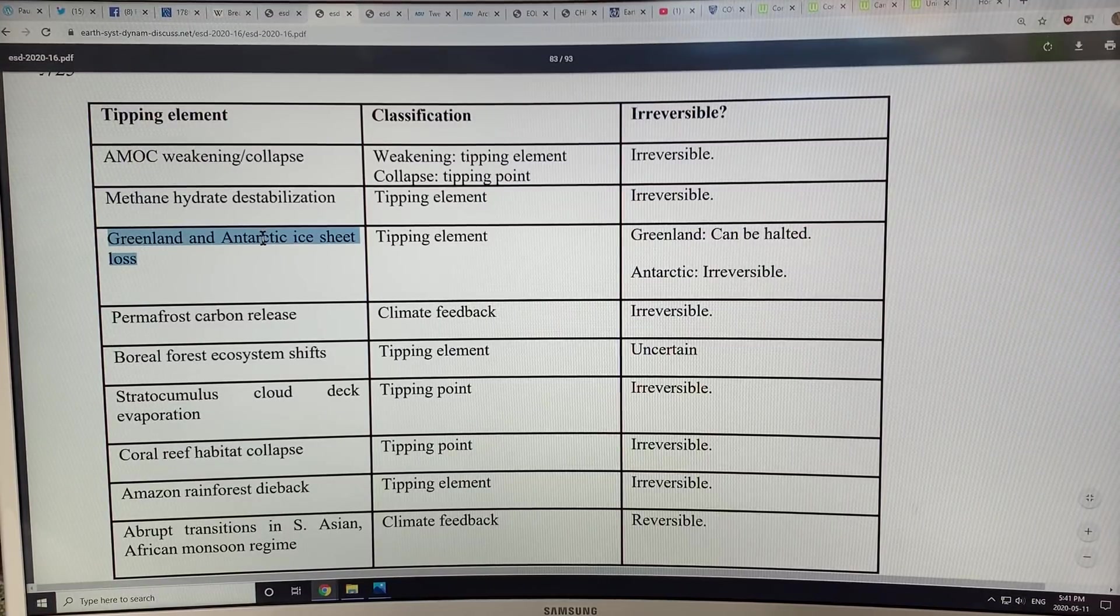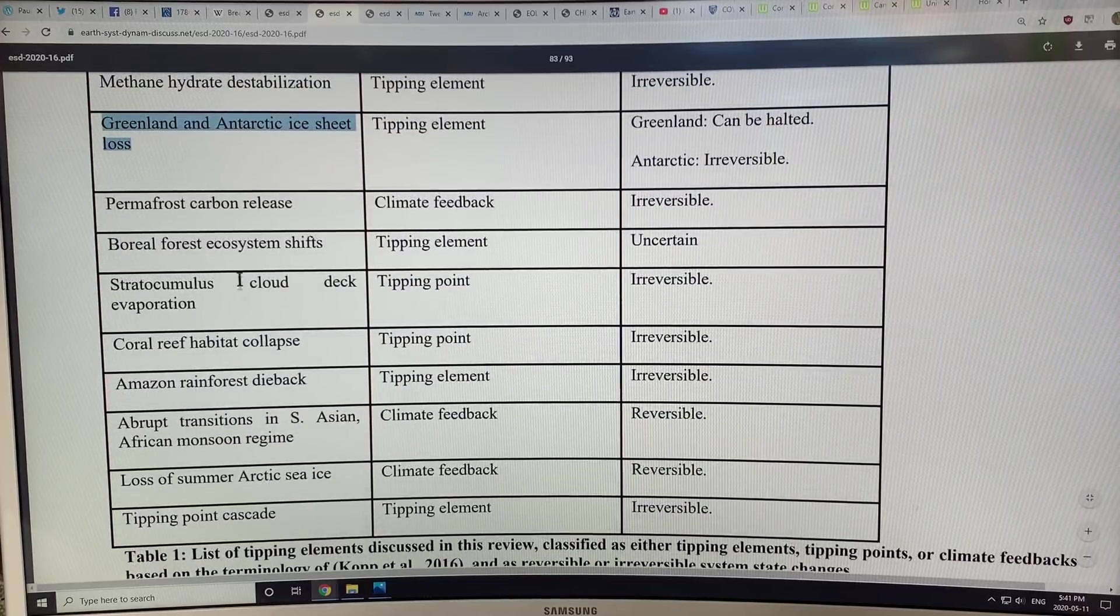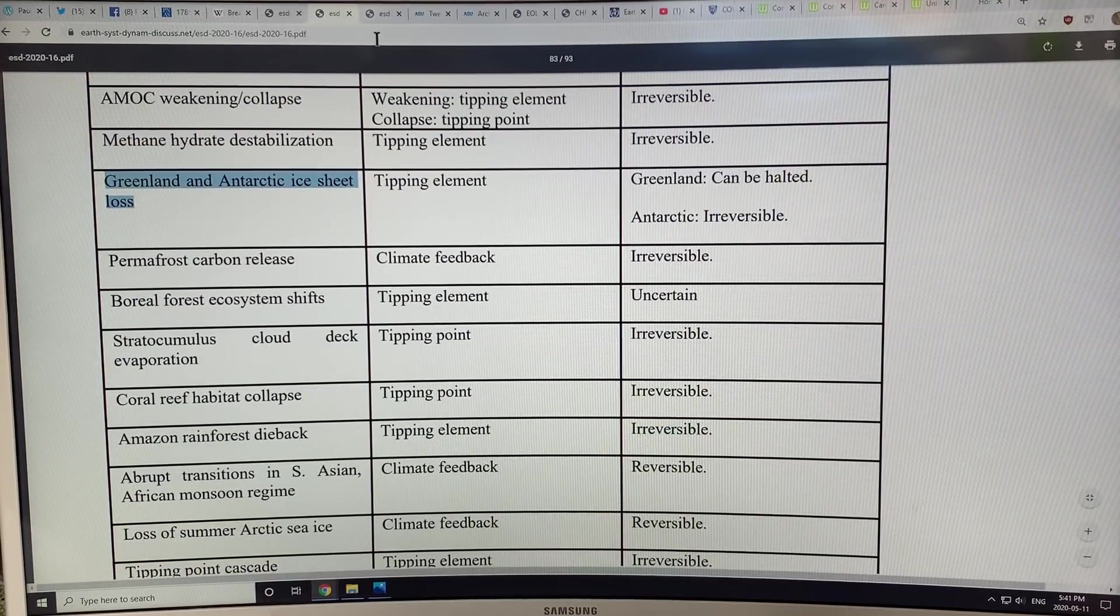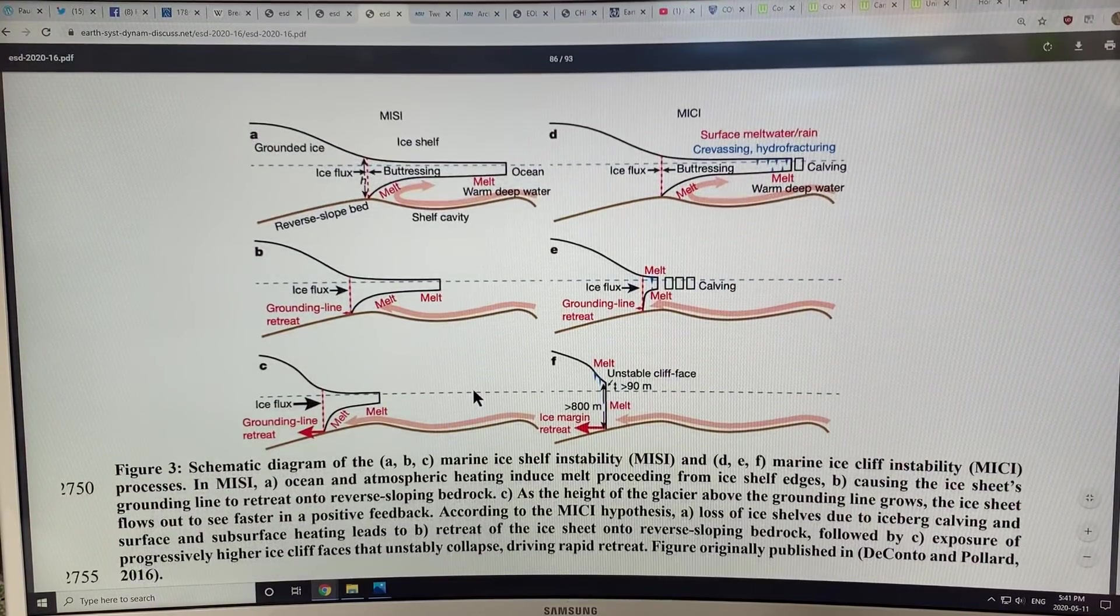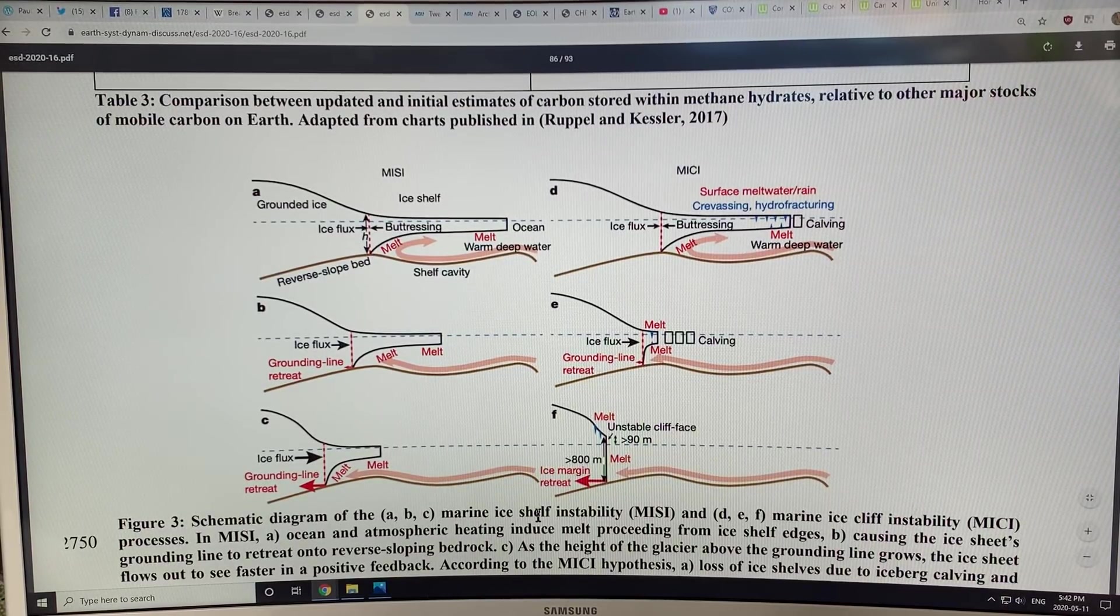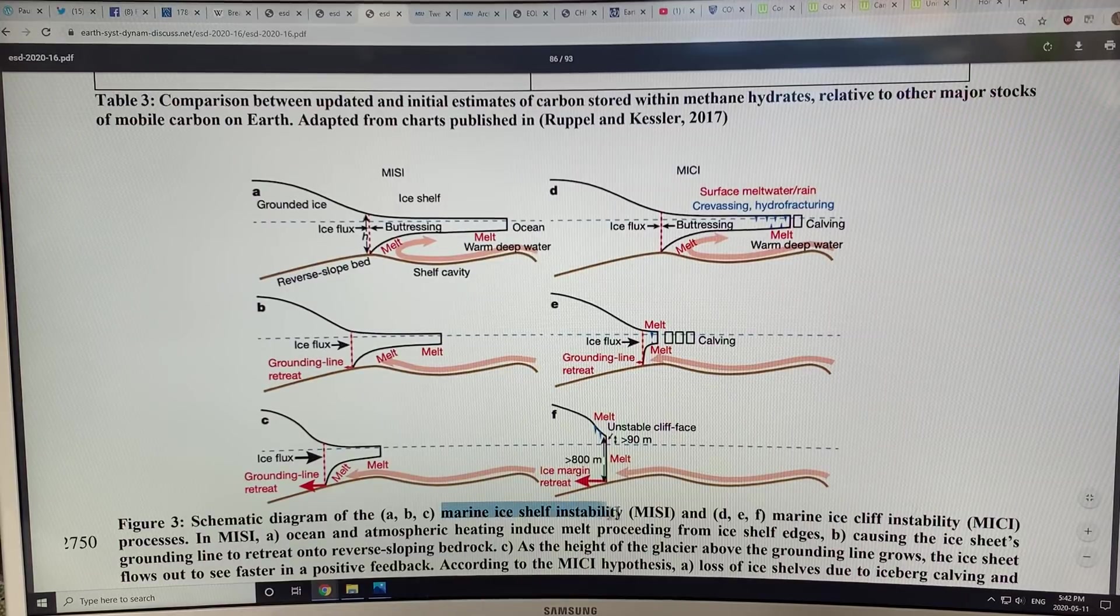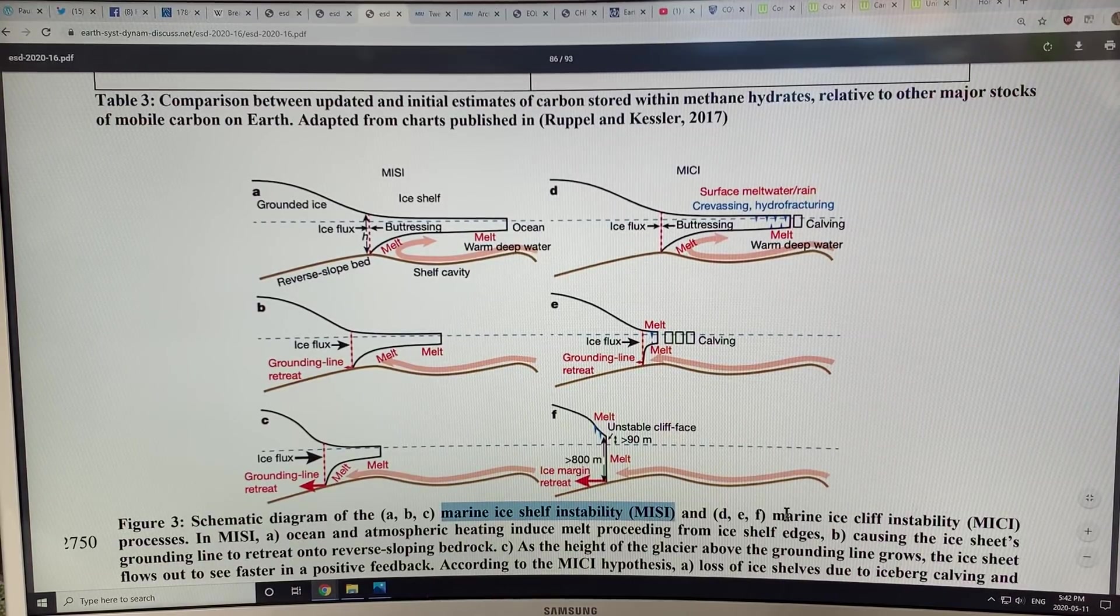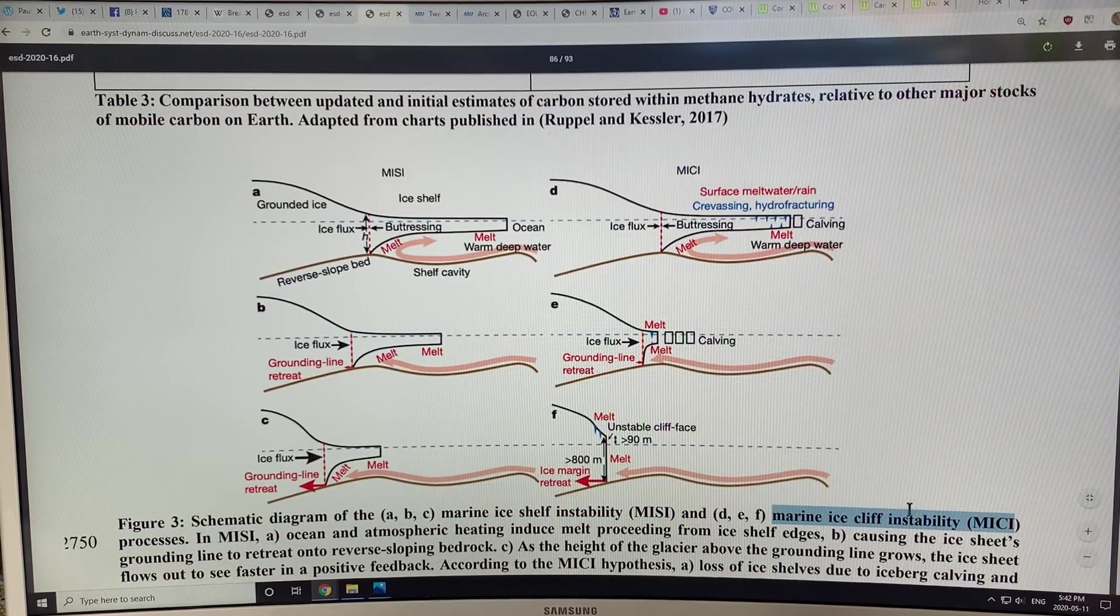As we lose the Arctic sea ice, that exposes Greenland. These things can cascade from one to the other. In terms of the mass loss from ice, from marine ice shelves, there's two different flavors here: MISI, which is Marine Ice Shelf Instability, and MICI, Marine Ice Cliff Instability processes.